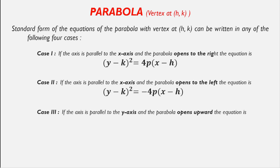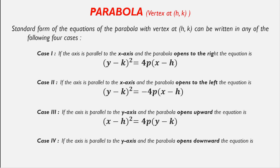Case 3: If the axis is parallel to the y-axis and the parabola opens upward, the equation is (x - h)² = 4p(y - k). Case 4: If the axis is parallel to the y-axis and the parabola opens downward, the equation is (x - h)² = -4p(y - k).